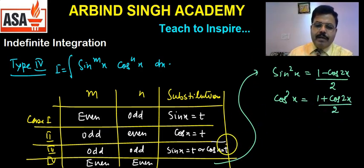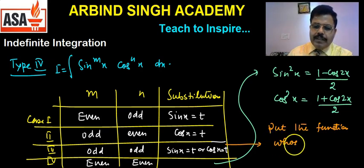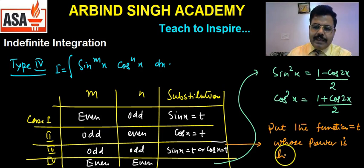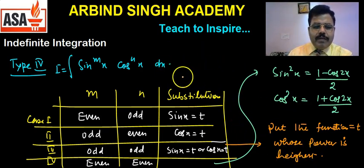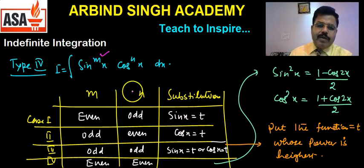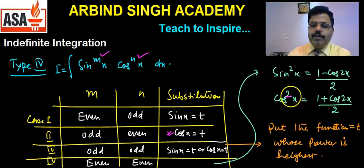जब दोनों के power odd हों तो कोई भी कर सकते हैं — put the function whose power is highest, i.e., t put the function whose power is highest. जिसका power ज़्यादा हो उसको t put कर लेना चाहिए। मोटे तोर पर: जिसका power odd हो, जिसका power even हो उसको t put करना चाहिए। अगर m even है तो sin x को t put करें, अगर n even है तो cos x को t put करें।